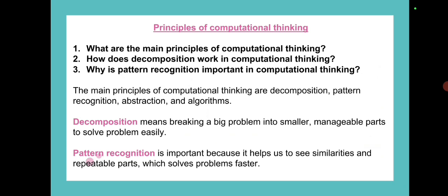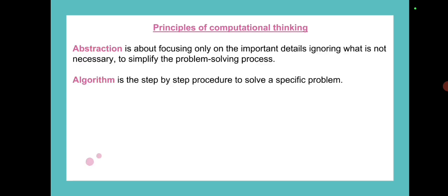Second one is pattern recognition. It is important because it helps us to see similarities and repeatable parts, which solves problems faster. Next one is abstraction. Basically, you have to focus on important details and ignore unnecessary or irrelevant details to simplify the problem-solving process.